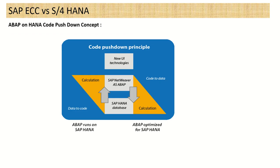As a technical consultant, there is also the Code Pushdown concept in S4 HANA. In ECC, there is a three-tier layer: database, application server, and GUI. When you select data from the database and want to perform calculations, those calculations happen at the application server layer, which makes the system slow. In S4 HANA, all calculations can be performed at the database level — this is called the Code Pushdown concept.